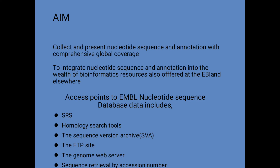The EMBL nucleotide sequence database data includes SRS, homology search tools, the sequence version archive, the FTP site, the genome web server, and sequence retrieval by accession number. These facilities offer a wide range of opportunities to search and download data.